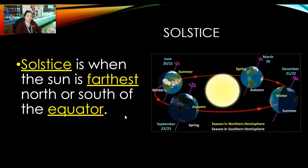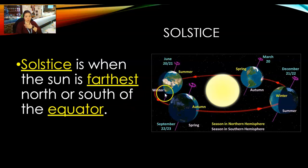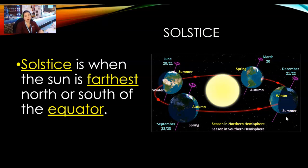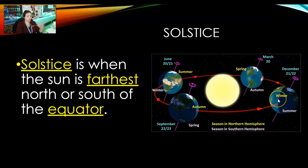This is called the solstice — it's when the sun is farthest north or south of the equator. You have the winter solstice and the summer solstice. We just passed the winter solstice, which is December 21st or 22nd. The winter solstice is the shortest day of the year; in summer it is the longest day of the year.